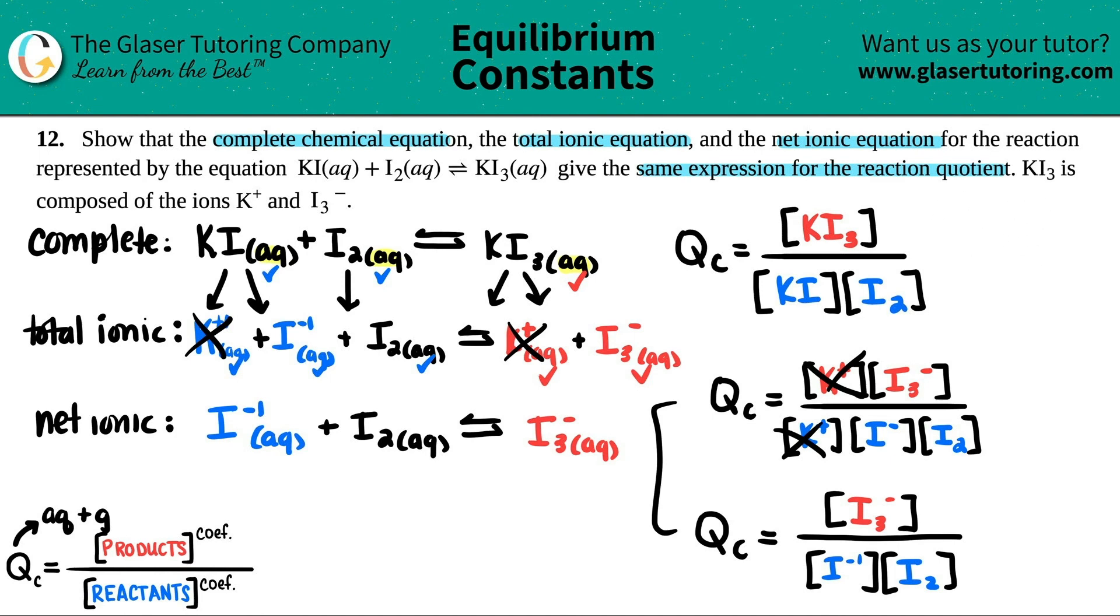So that's why they're all equivalent. And that's what we had to show. It said, show that the complete chemical equation, the total ionic and the net ionic, give the same expression. So they all give the same expression. And maybe I'll just fix this up a little bit, just so that you guys don't get confused. But they give all the same expression because the salts would yield the same numbers as the other ones, even if you break it down. So they're all the same.